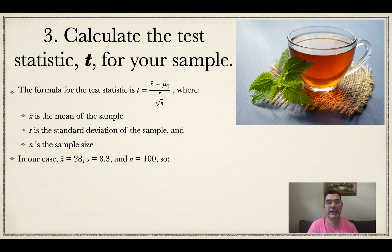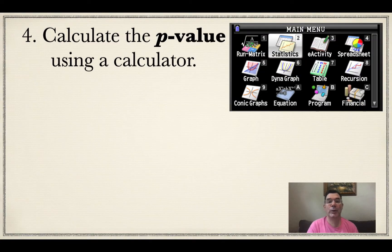x bar was 28, s was 8.3, and n was 100. So that means our t statistic after plugging all of that in is 3.614. Now we're going to use our calculator to find a p-value. Here's how that works.